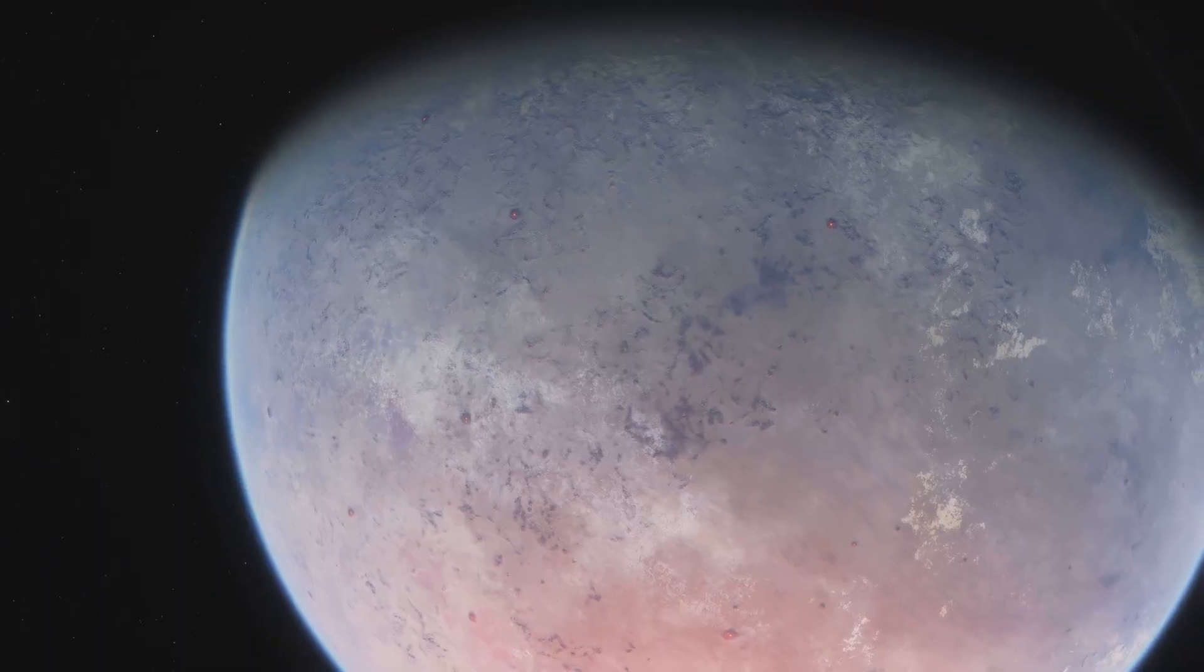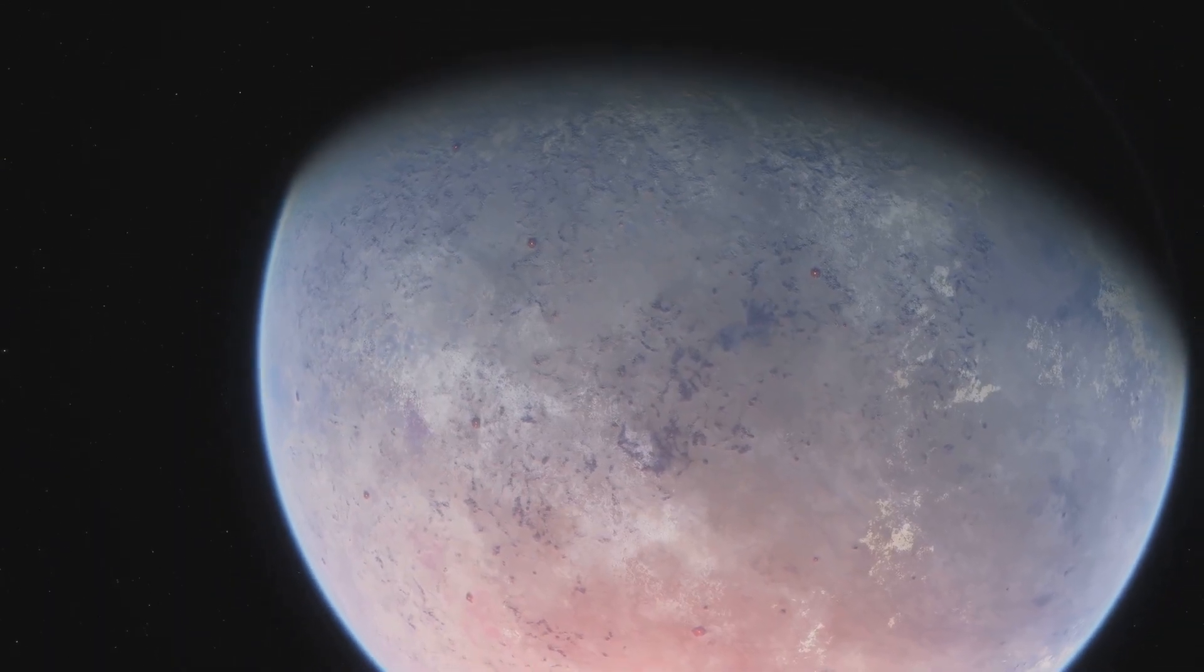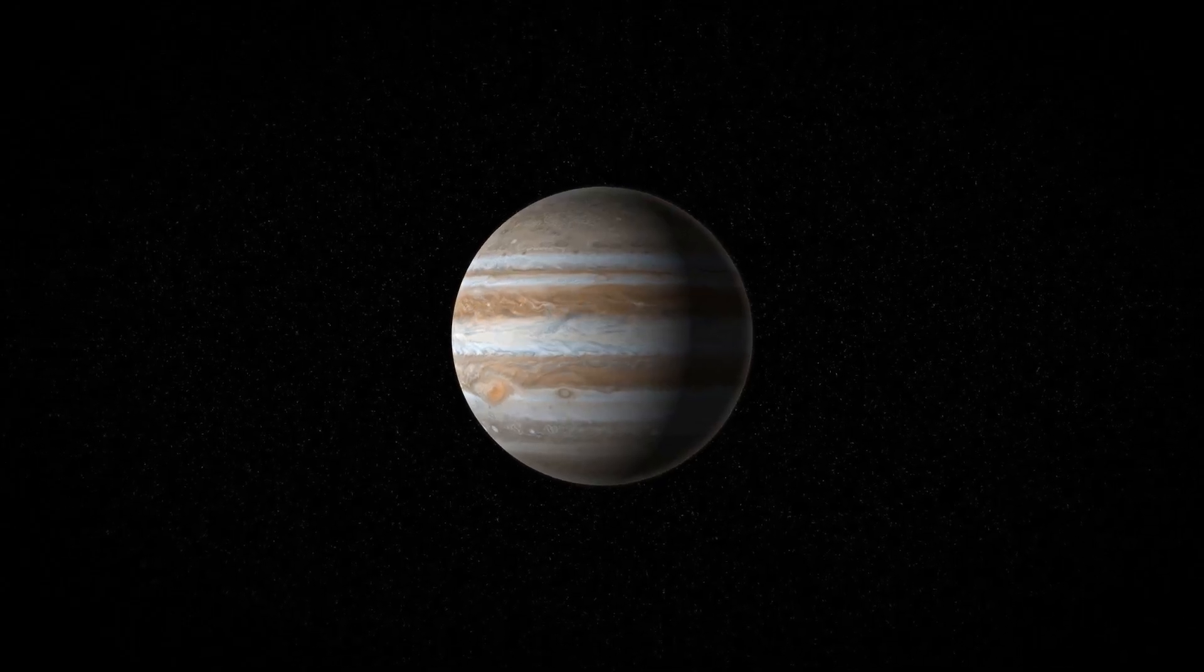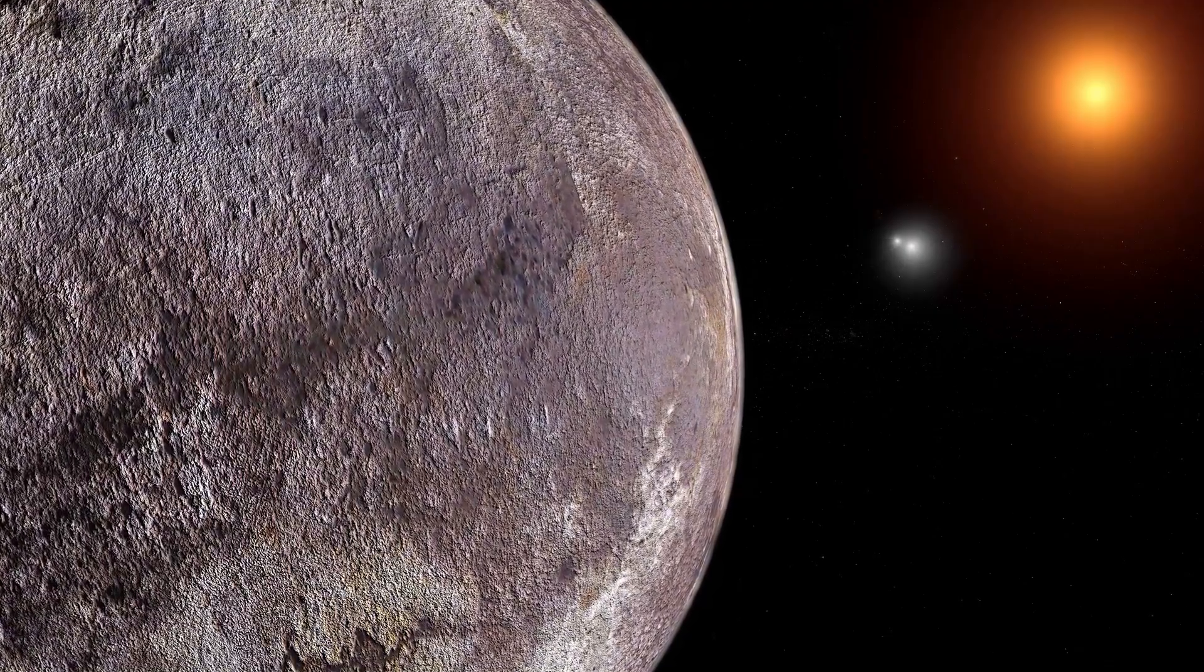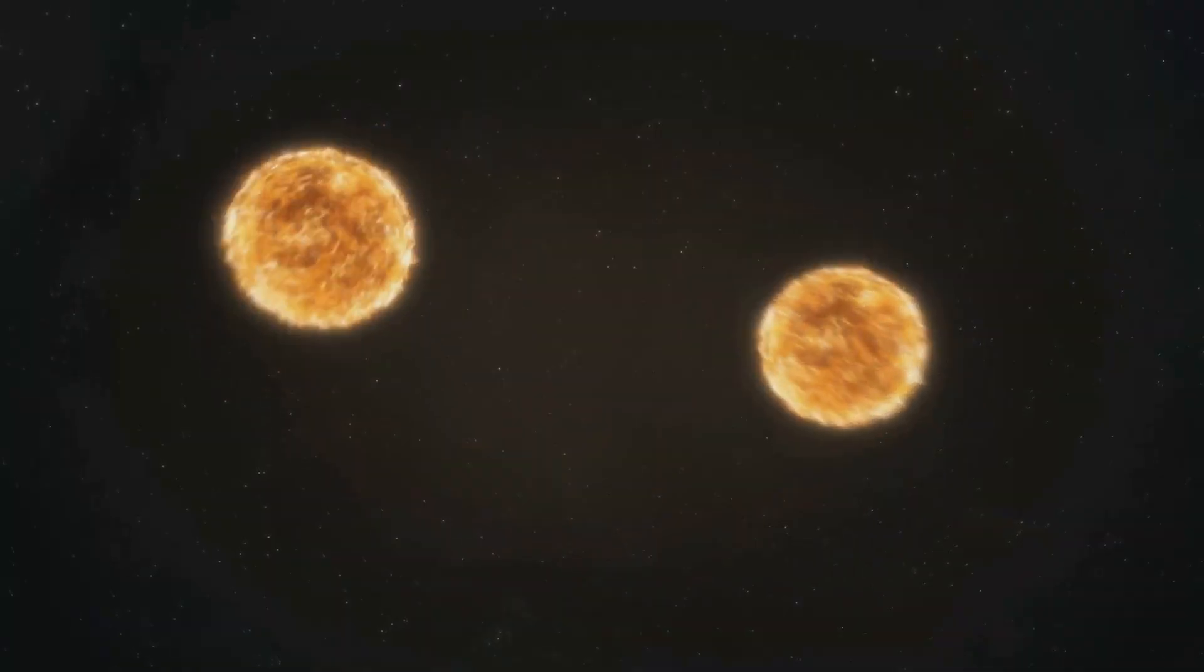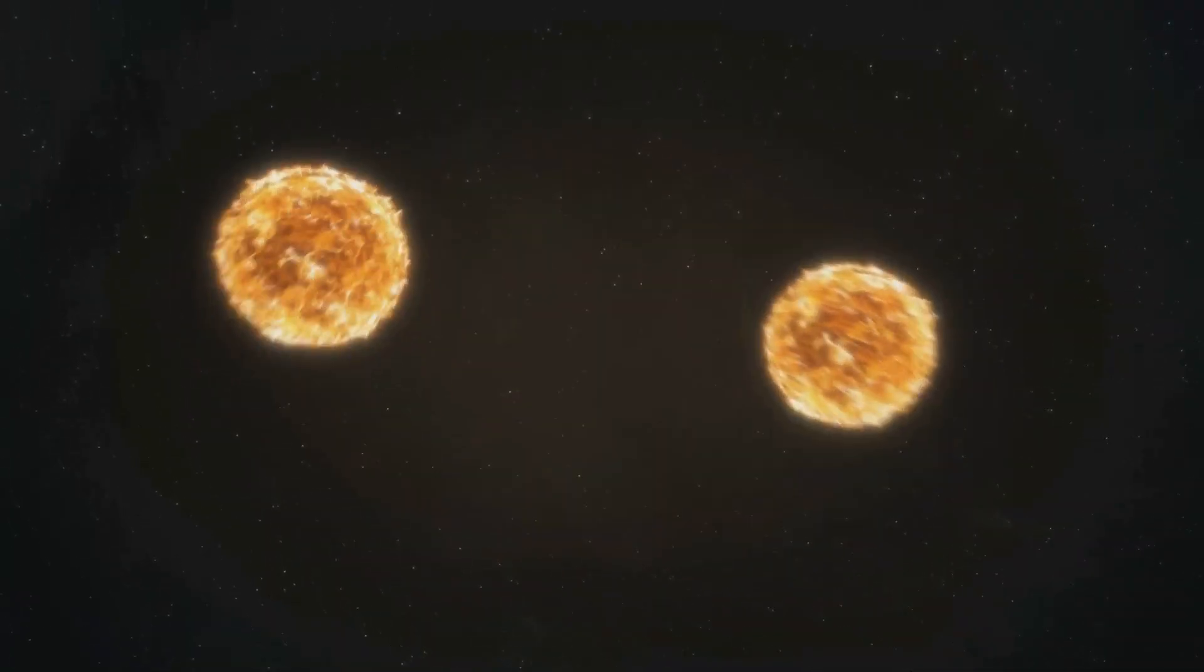The exoplanets discovered so far are incredibly diverse. Some are giant gas planets, much larger than Jupiter. Others are rocky planets like Earth, but much closer to their stars. Some even orbit two stars, like something out of Star Wars.